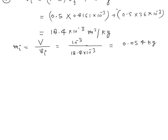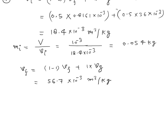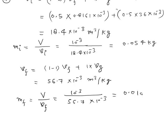Similarly, we calculate the final specific volume at 5°C where quality is 100%. So (1 minus 1) times VF plus 1 times VG at 5°C gives VG = 56.7 × 10⁻³ m³/kg. The final mass equals V divided by VF, which is 10⁻³ divided by 56.7 × 10⁻³, giving a final mass of 0.018 kg.